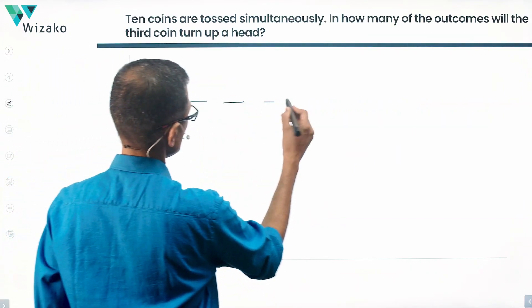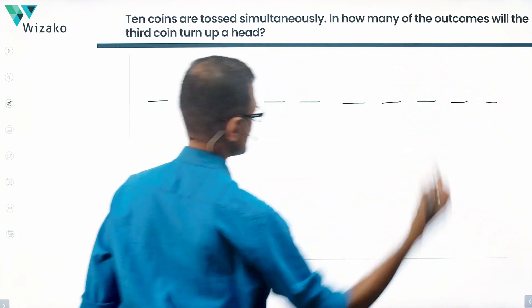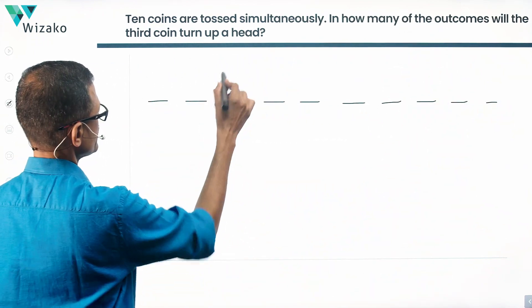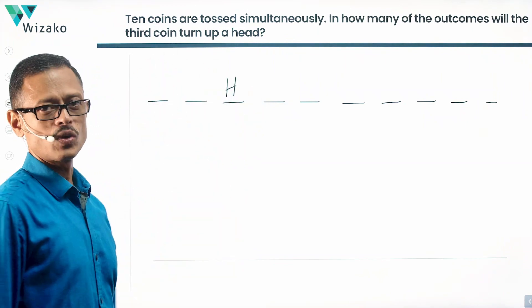1, 2, 3, 4, 5, 6, 7, 8, 9, 10. Right. So coin 1, 2, 3, the third coin has to be a head is what they have said.